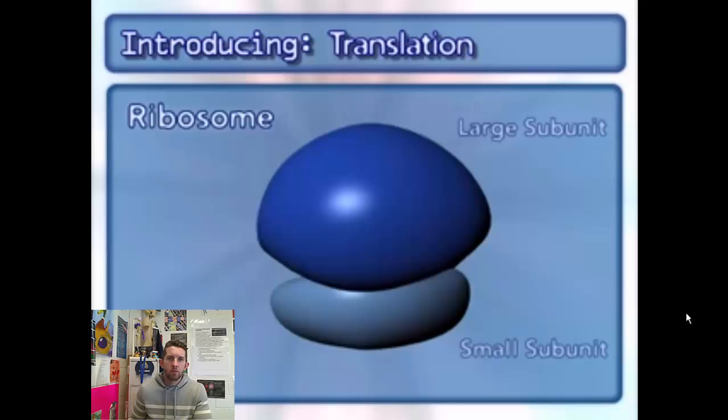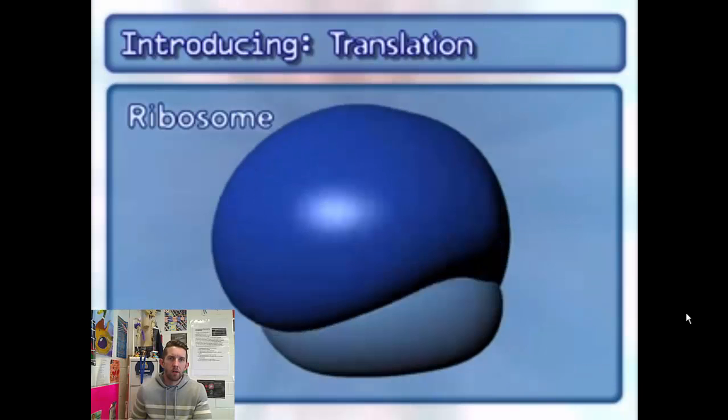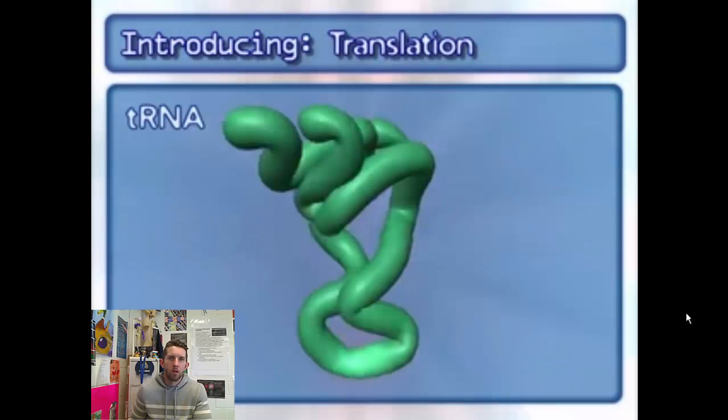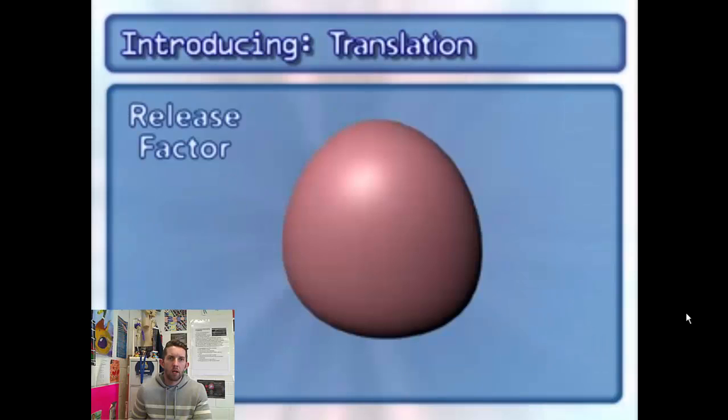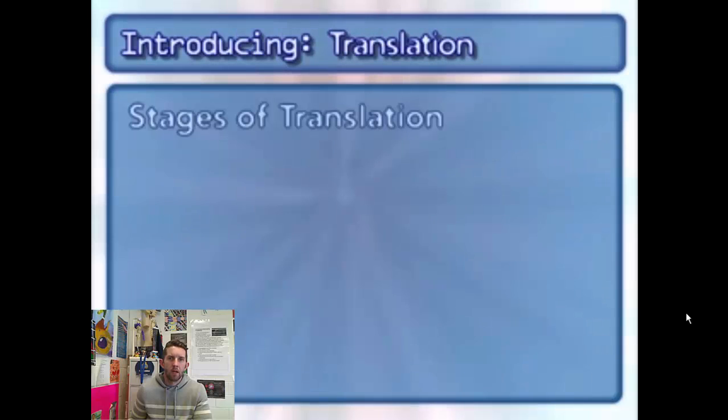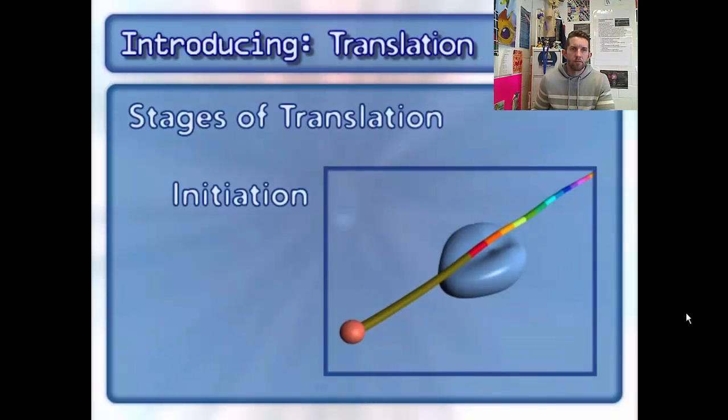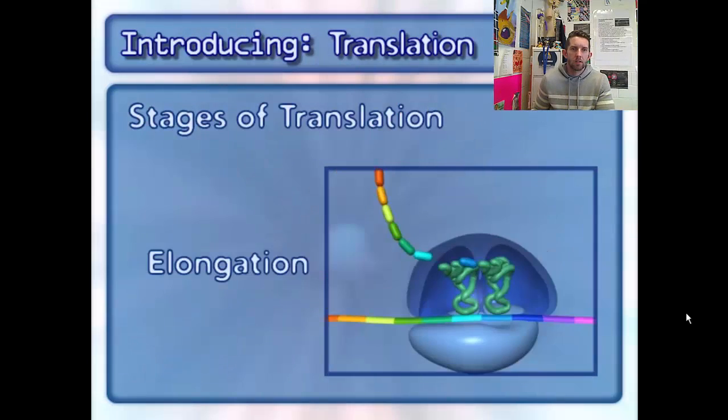So this is the mRNA language. We're going to need a ribosome with a large subunit and a small, and there's our tRNA molecule, which is going to bring with it an amino acid. A release factor is going to tell us the end, and there's kind of the overview. Initiation, elongation, and termination.